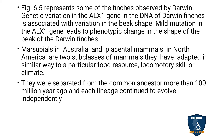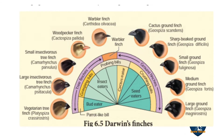Mild mutations in ALX1 lead to changes in the shape of the beak. You can see the example and the variation of the beak in this diagram — the beaks have been changed according to the food, as you can notice in this diagram.